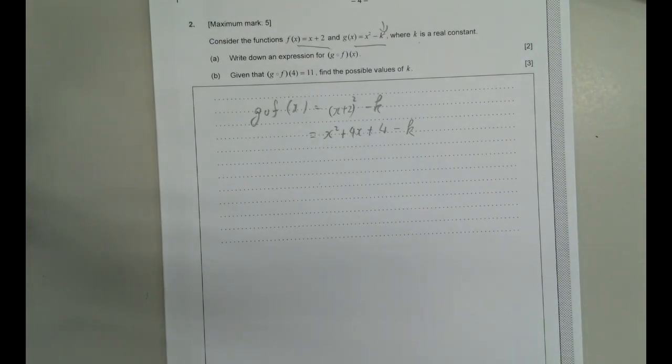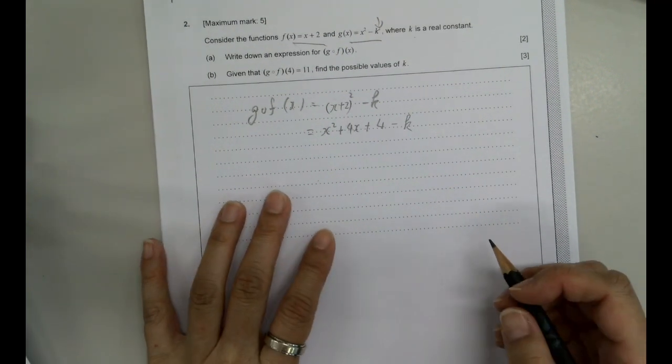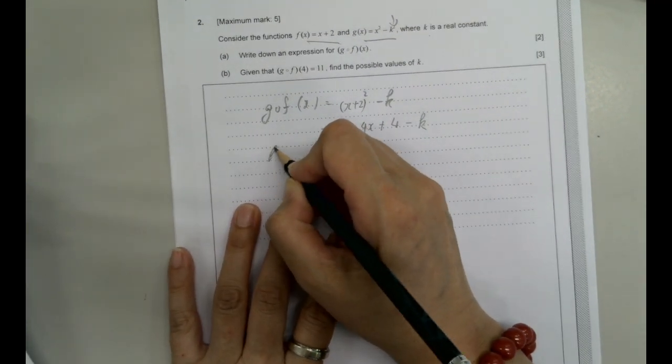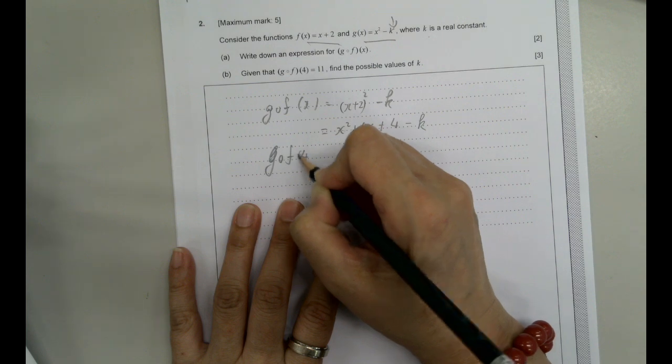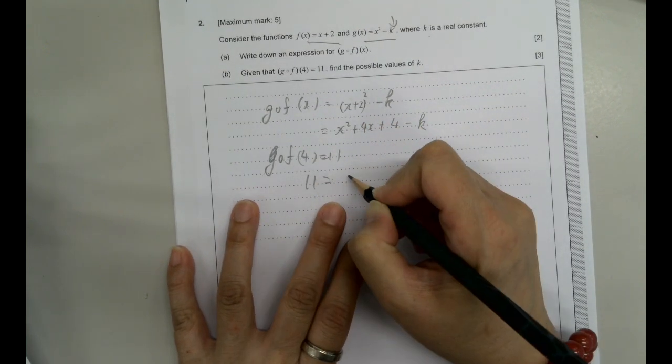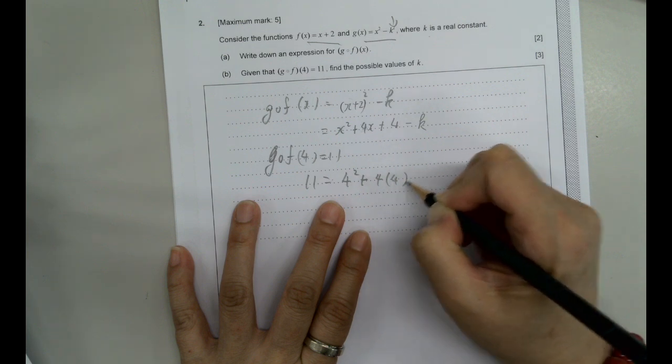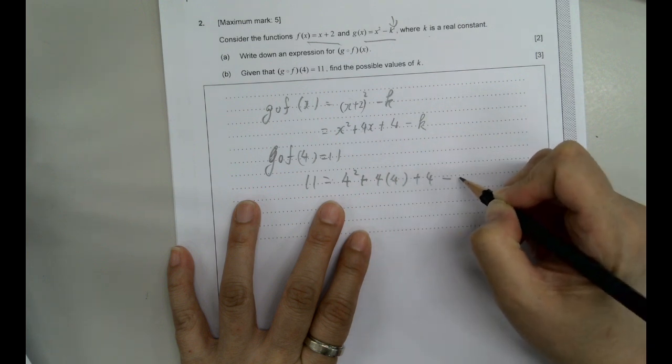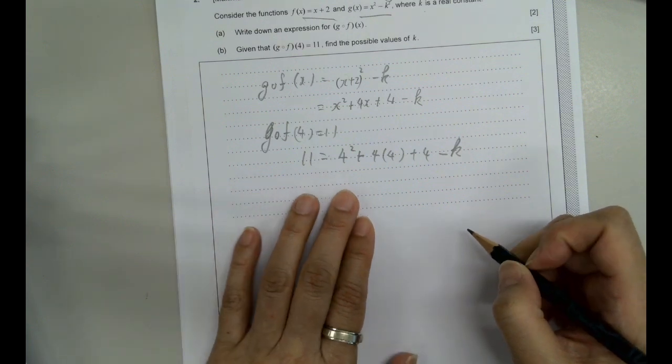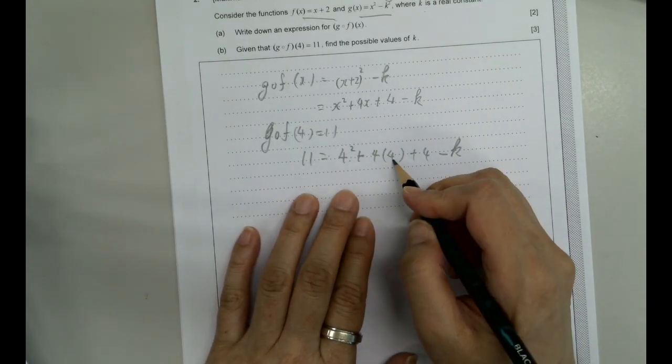And the next bit is fog equals to 11. So which means that g of 4 equals to 11. So 11 equals to 4 squared plus 4 times 4 plus 4 minus k. There's a lot of 4 there.